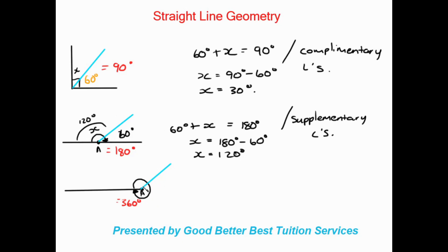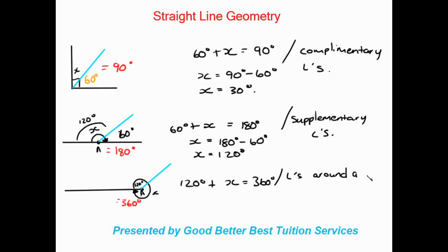Now if we're given an angle of 120 degrees, we have 120 degrees plus x — the leftover angle — going all the way around, equal to 360 degrees. Our reason here is going to be angles around a point equal to 360 degrees. Then you solve for x and you need 240 degrees. That's a bit of a recap on these three basic rules.